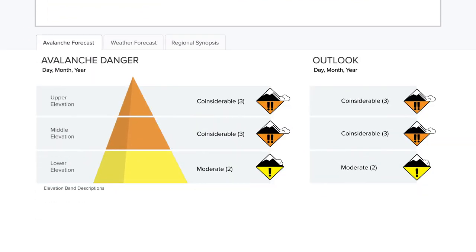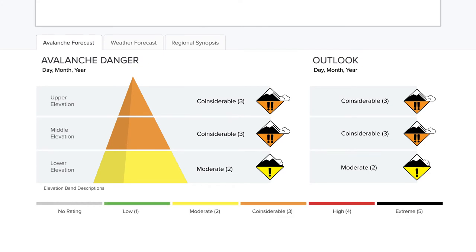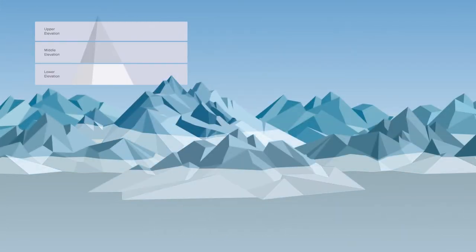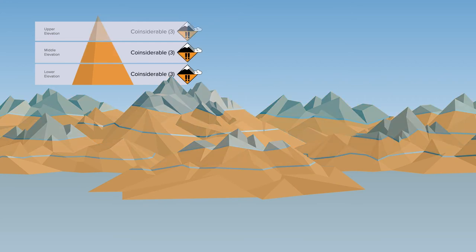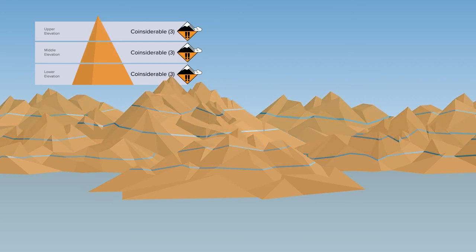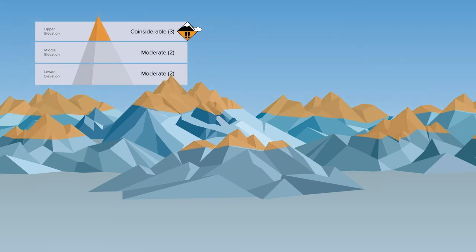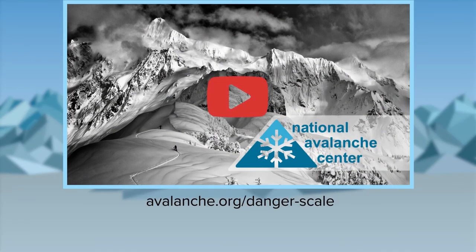Next is the avalanche danger rating. The scale consists of five ascending levels. Your chance of encountering an avalanche increases dramatically with each level. Many avalanche forecasts provide danger ratings for three elevation bands. For example, in this view, the danger is rated at considerable at all elevation bands. And in this view, the danger is considerable in the upper band and moderate in the middle and lower band. For a more detailed tutorial on the avalanche danger scale, go here.